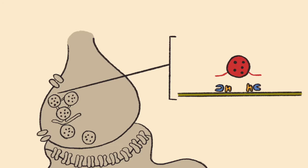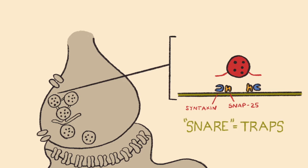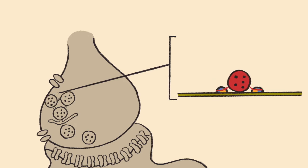The formation of the docking complex involves four key proteins. On the presynaptic membrane, there are two T-snare proteins: Syntaxin and SNAP25. Think of T as standing for target, because these presynaptic membrane snare proteins are the target for vesicle binding. Snares make sense because snares are traps consisting of a wire or rope noose for catching animals — these snare proteins catch the vesicle.